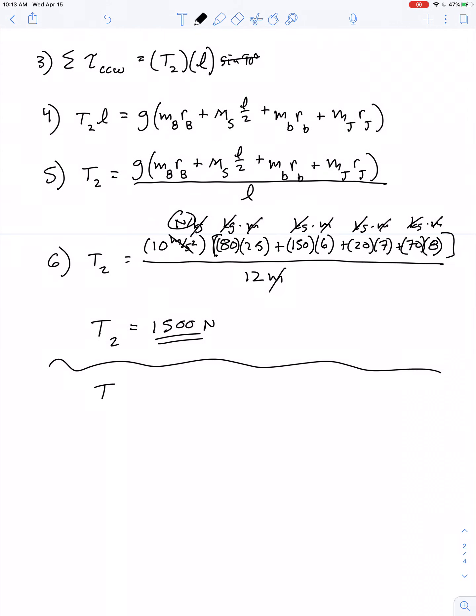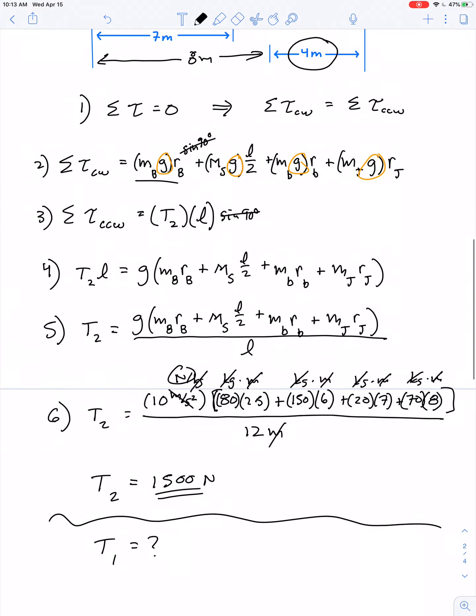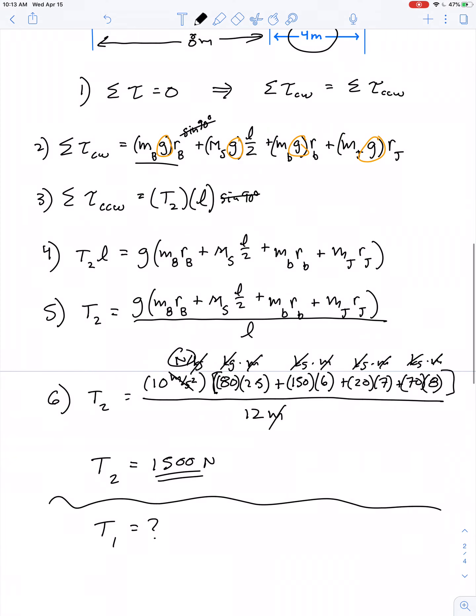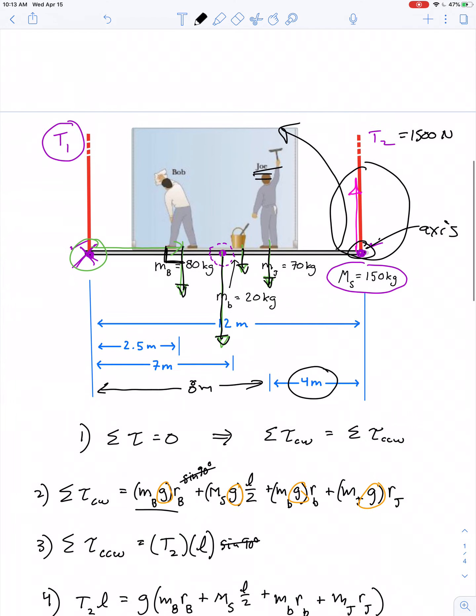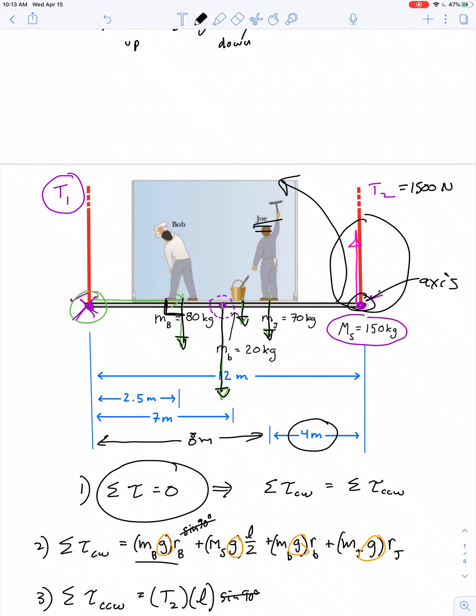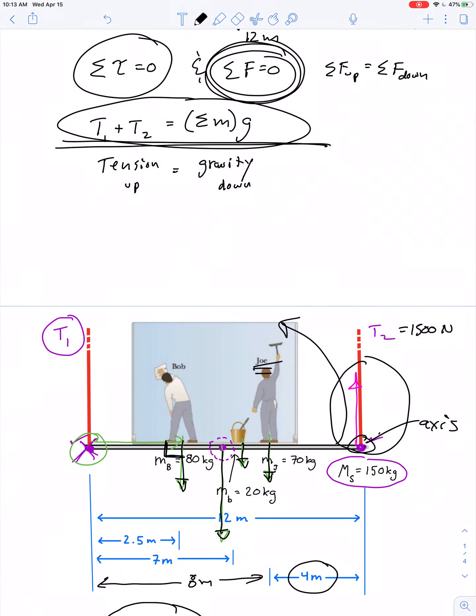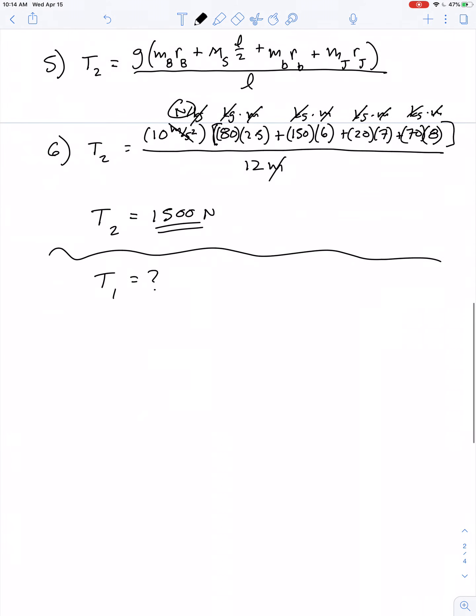Now we have to find the tension in the left cable. We could do the exact same work by moving the axis of rotation, but let's do it an easier way. Instead of considering net torque equals zero a second time, let's consider that net force has to equal zero. The two upward tension forces have to equal all the downward force.